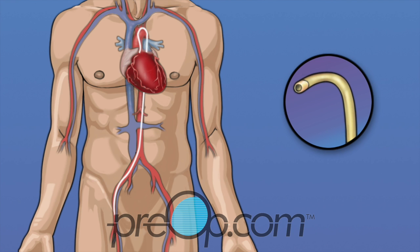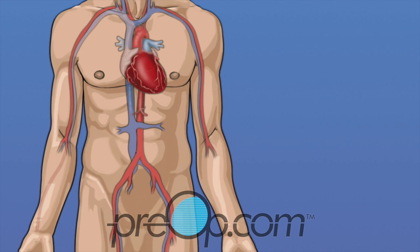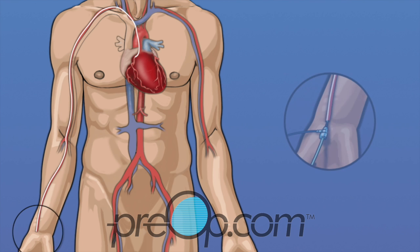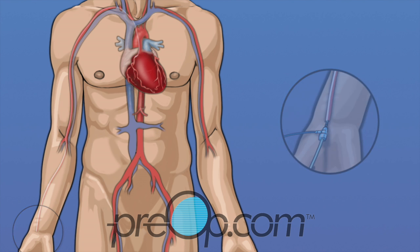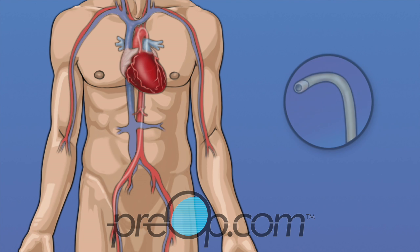The radial artery in the arm is another site where a catheter can be placed. The catheter is inserted at the wrist, then guided to reach the heart.